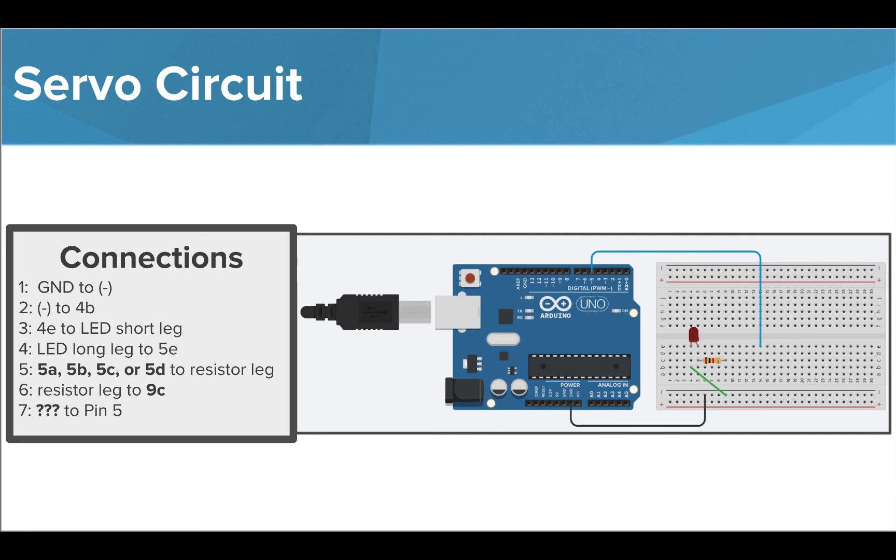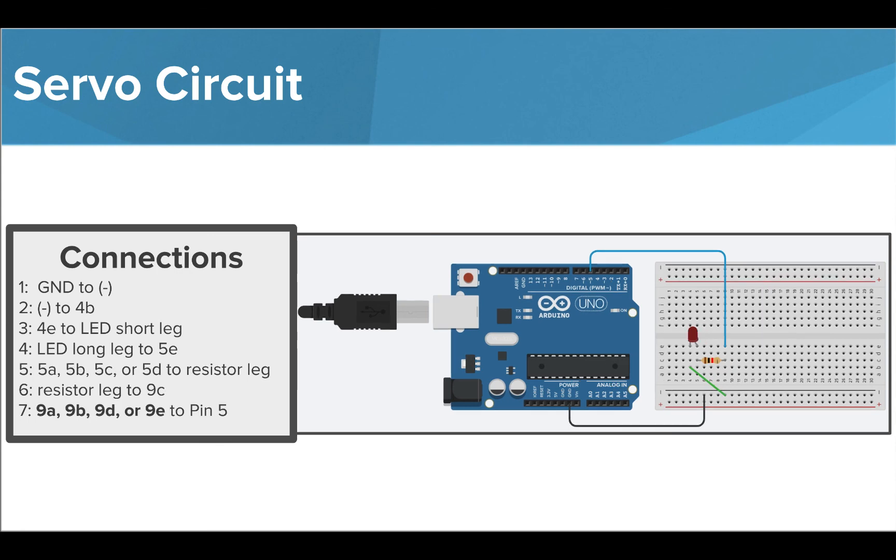But now a break exists after the current leaves my resistor at port 9c. Where would I need to move my jumper wire in order to complete my connection? I could move the jumper wire to port 9a, 9b, 9d, or 9e to bring back the connection to pin 5.